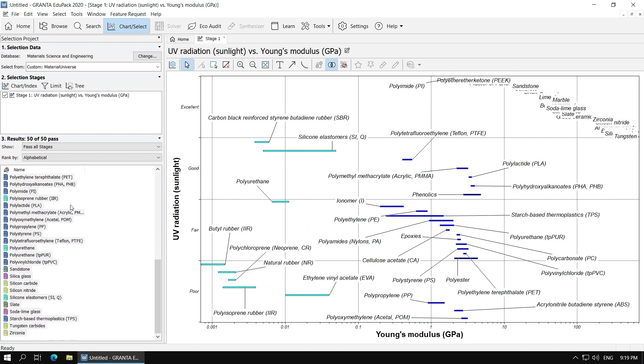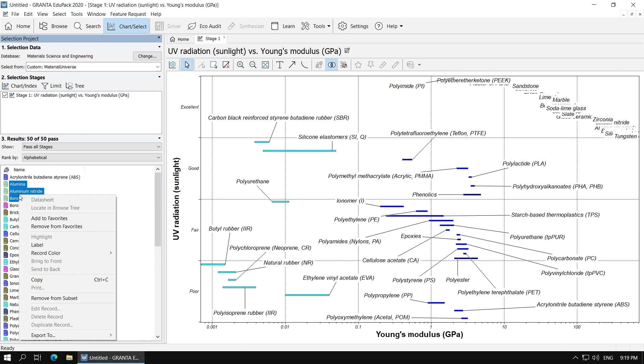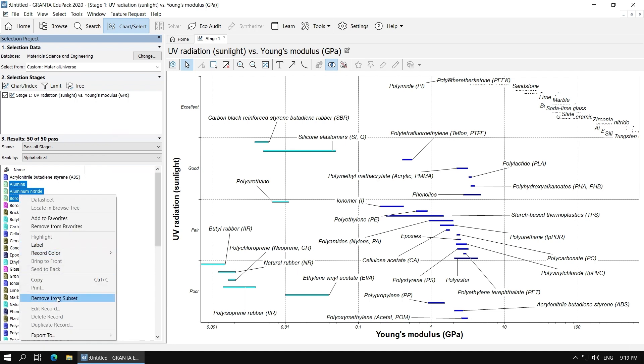But by using the CES software, the decision of choosing between them is easier. From the software analysis, we can conclude that glass ceramic is an excellent material prone to sunlight and is stiffer than most materials that are transparent.